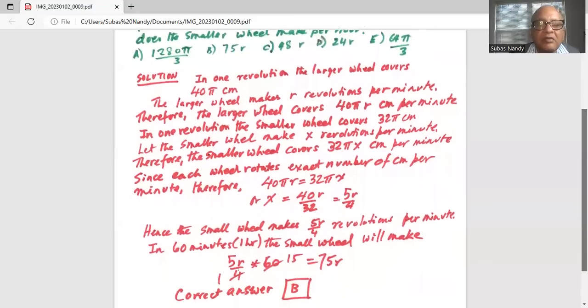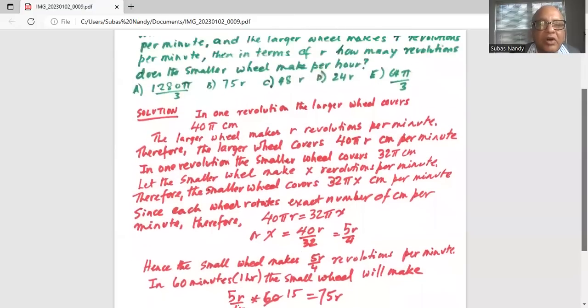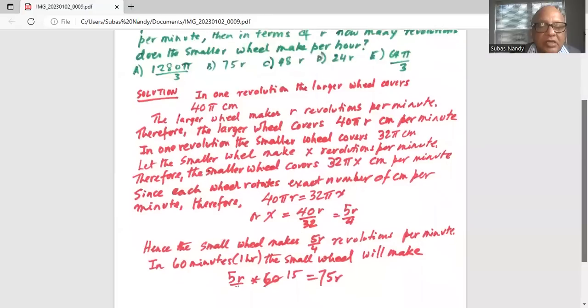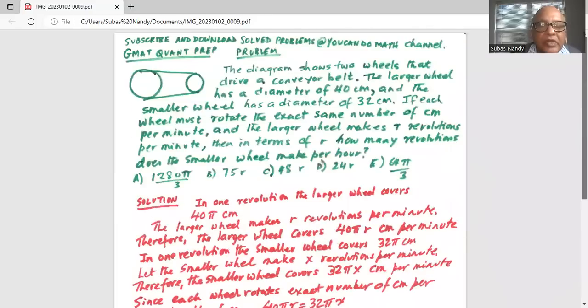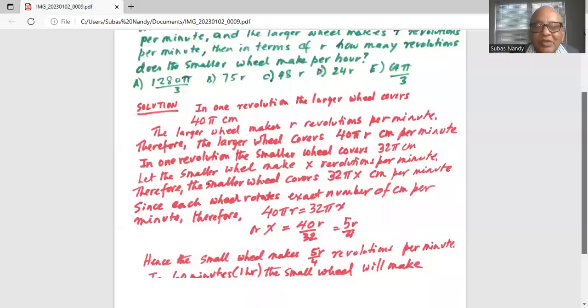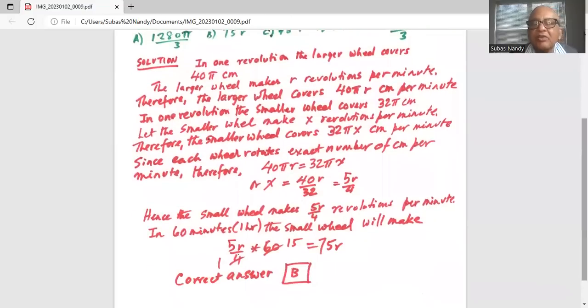So you cancel the 4 with itself is 1 and 60 divided by 4 is 15. So 5r times 15 is 75r. So the correct answer is option B, 75r.